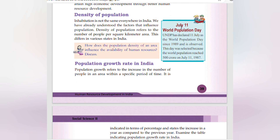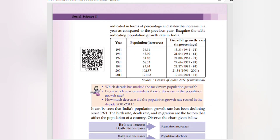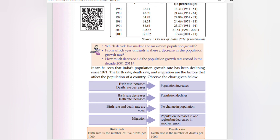July 11 is World Population Day. The UNDP has declared July 11 as World Population Day since 1989. This date was selected because the world population reached 500 crore on July 11, 1987. Population growth rate is indicated in terms of percentage. Examining the census data: in 1951 the population was 36.11 crore, growing to 43.90 crore in 1961, 54.82 crore in 1971, 68.33 crore in 1981, 84.64 crore in 1991, 102.87 crore in 2001, and 121.02 crore in 2011. India's population growth rate has been declining since 1971.